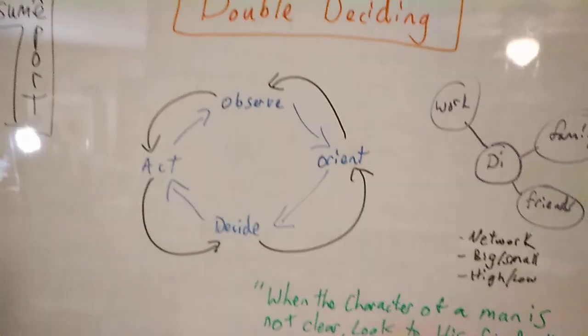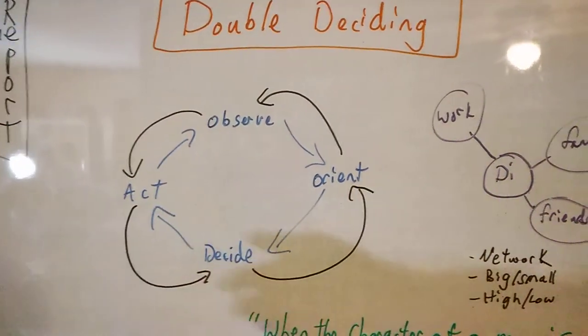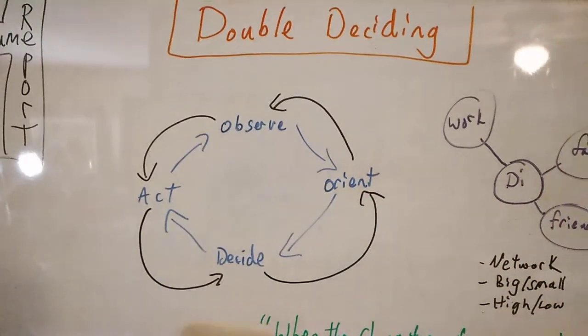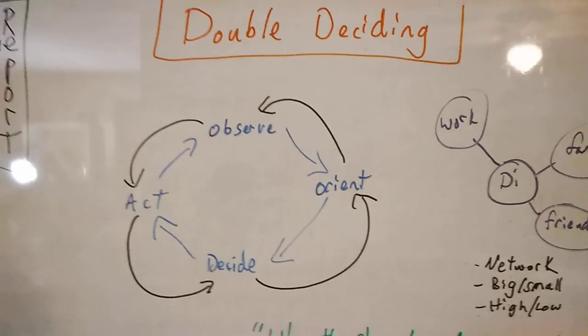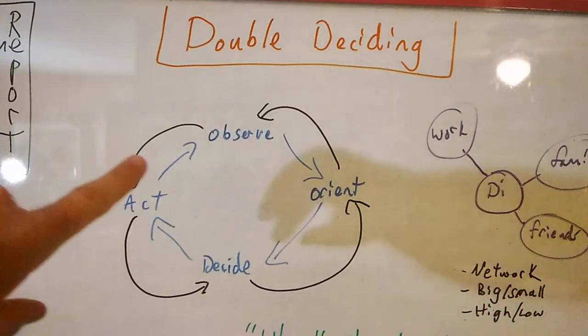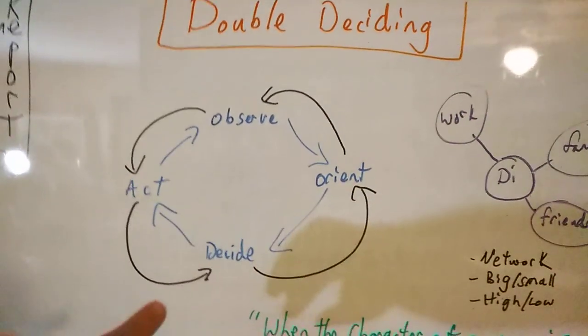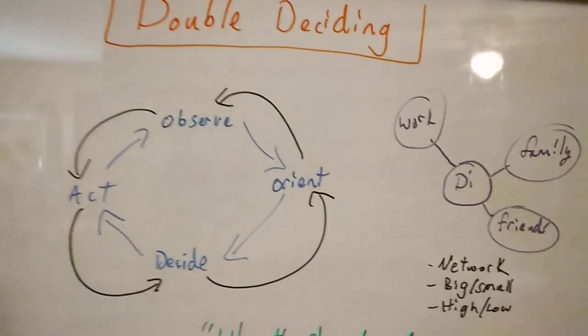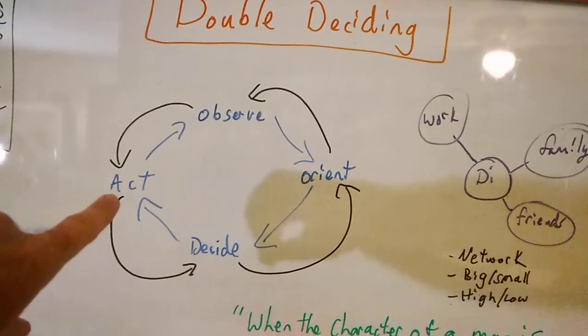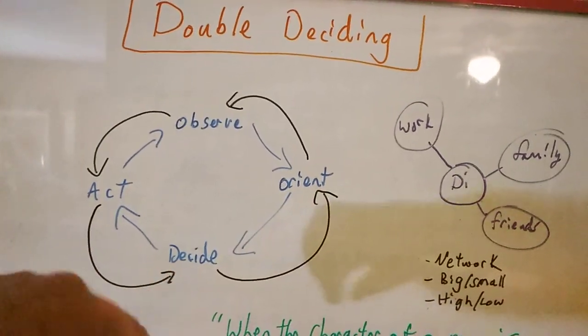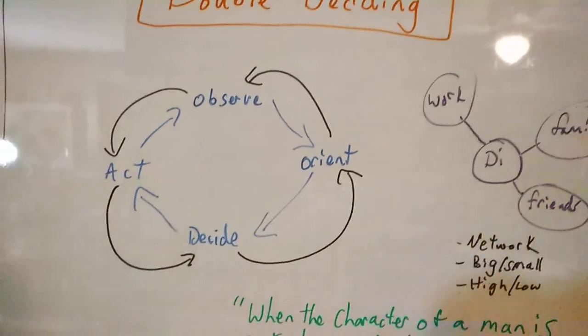And it occurred to me literally today that regarding double deciding, people being able to go back and forth between this is what I do, this is what other people do, this is why I do it, and just being able to put that all together. It occurred to me that in a way they're kind of using the OODA loop in reverse. So somebody who double decides, or a DE I guess, sees somebody do something, and then they might ask a question here. DE is about asking questions.